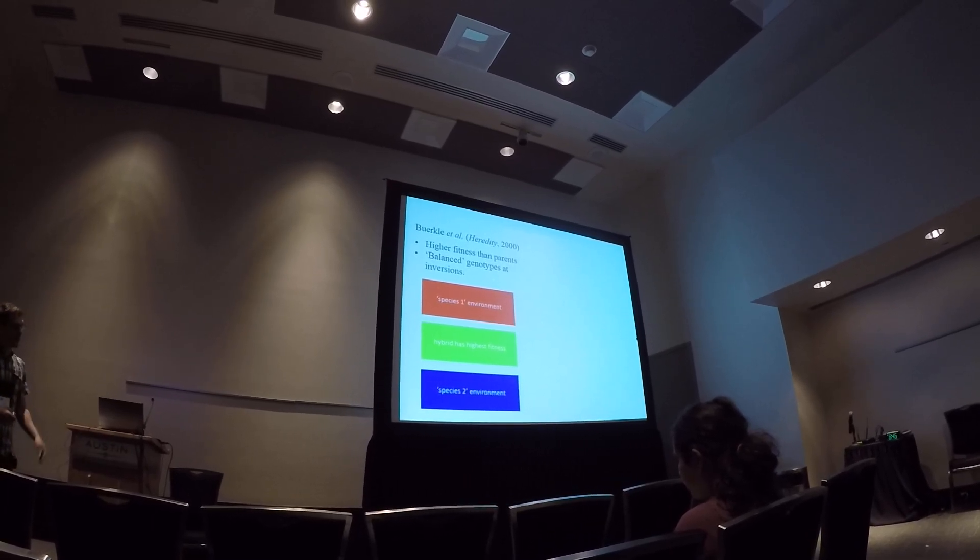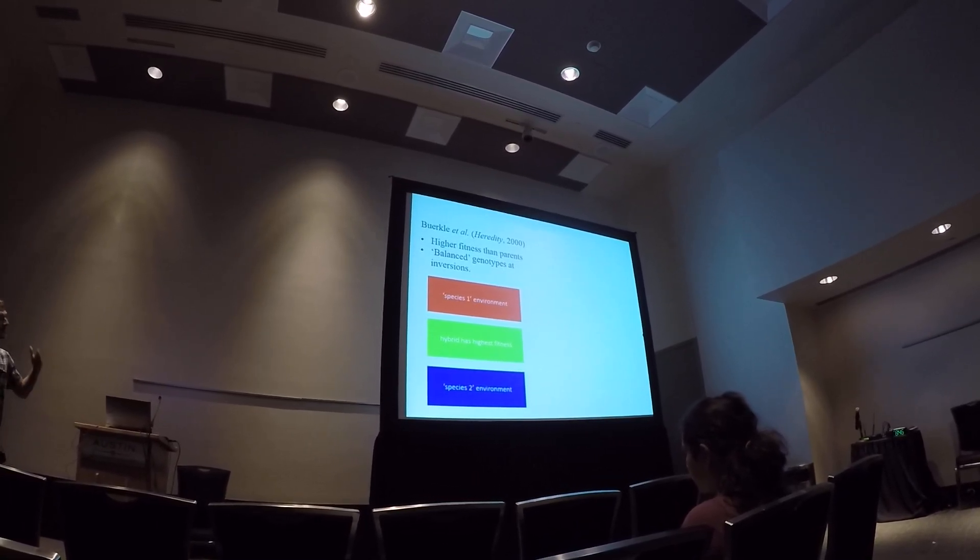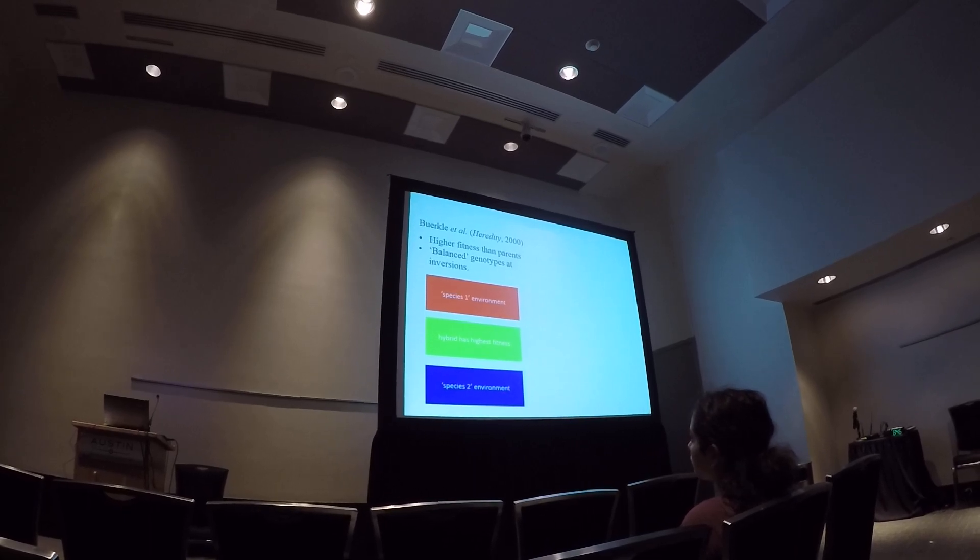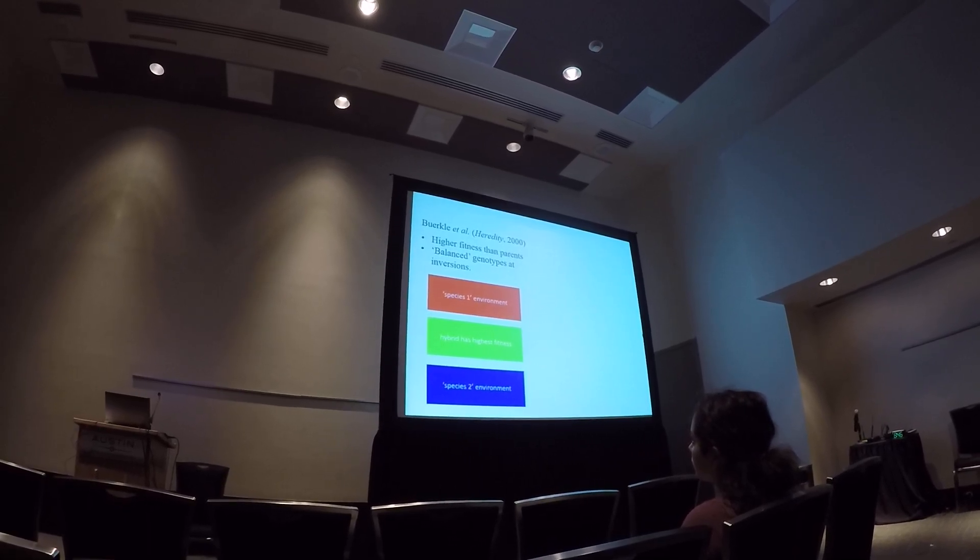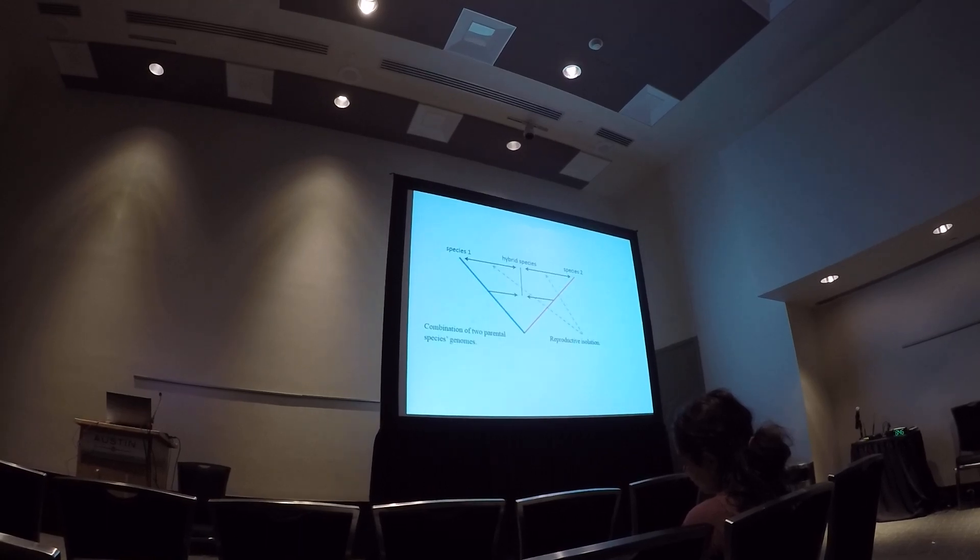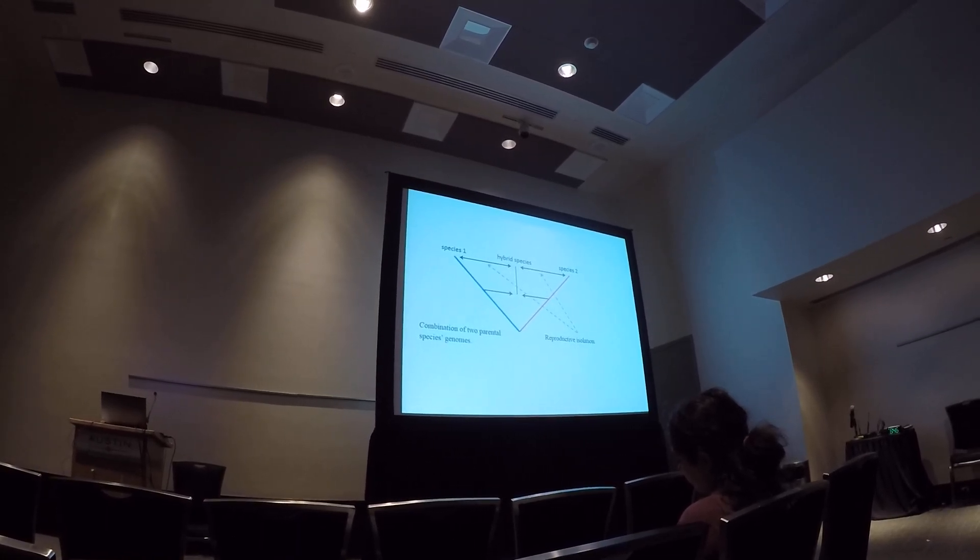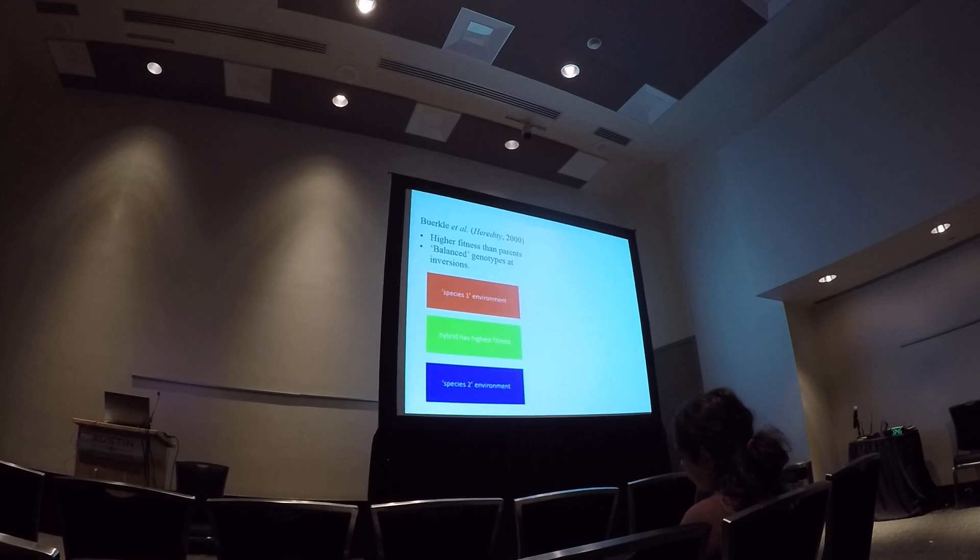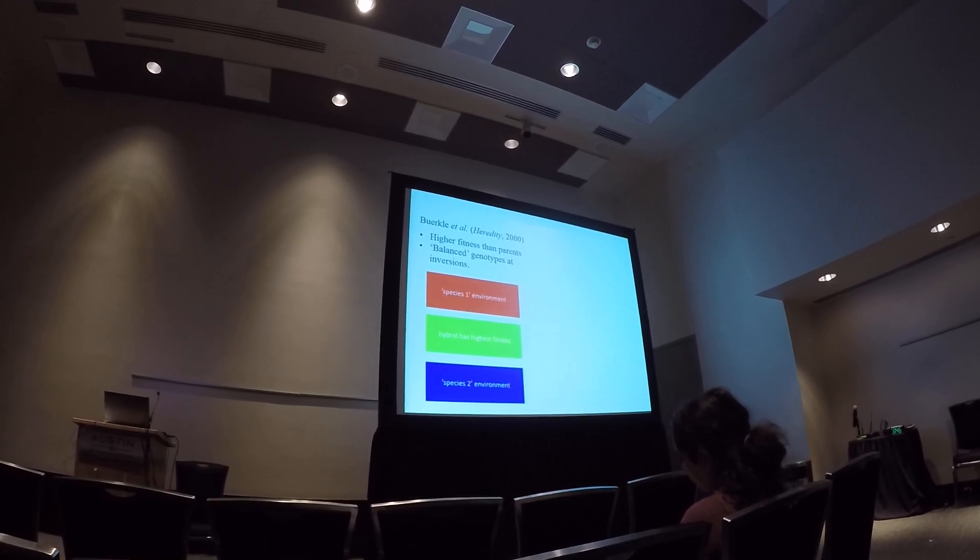And then polymorphism, inversion polymorphisms that differ between the two parental species become balanced in the hybrid species, making them completely interfertile, but having some intrinsic incompatibilities with their parental species.